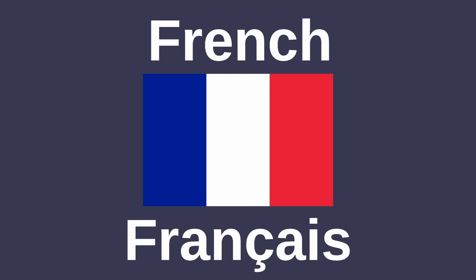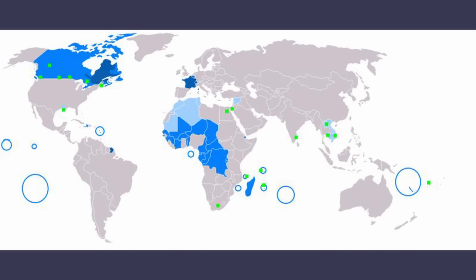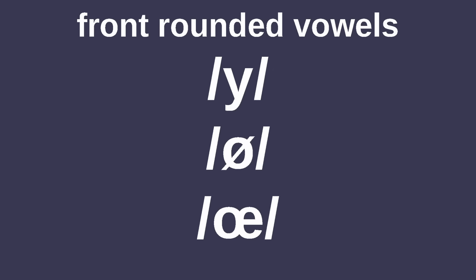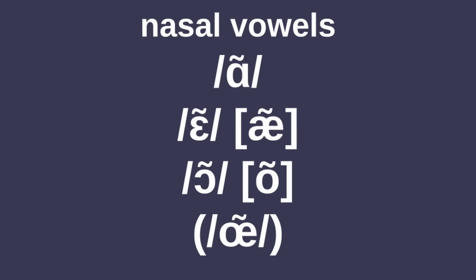Next up we have French. It's spoken in France and many of its former colonies, including lots of Africa, French Guiana, Quebec, and parts of Oceania and the Caribbean. French has the most oral vowels out of any major Romance language, with 11 in Parisian French and up to 13 in some dialects. It sticks out with its front-rounded vowels, namely /y/, /ø/, and /œ/, and has nasal vowels /ɑ̃/, /ɛ̃/, and /ɔ̃/ in Parisian French, with /œ̃/ present in other dialects.